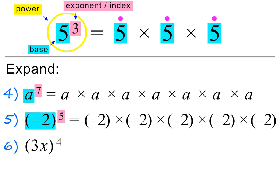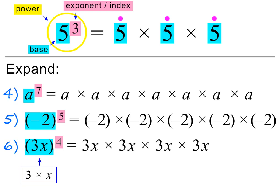In the next example, we are asked to expand 3x all to the power of 4. The base is 3x, which is just shorthand for 3 times x, and the exponent is 4. This means we need to multiply 3x by itself 4 times. Please pause to check.